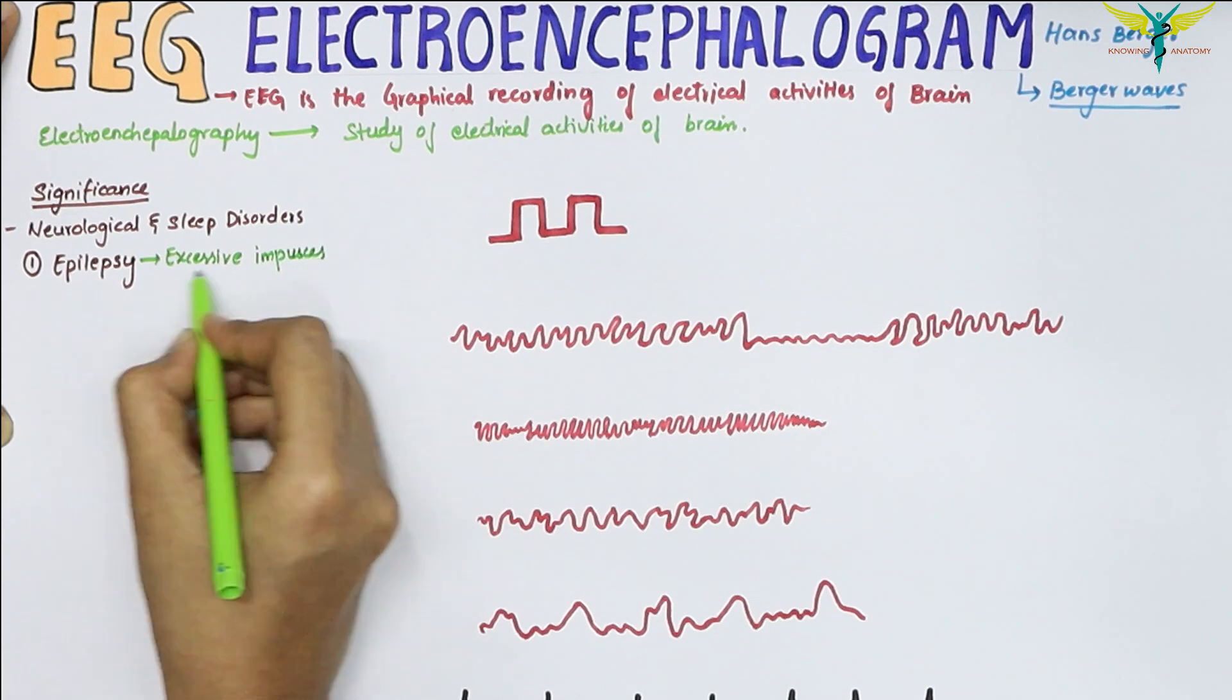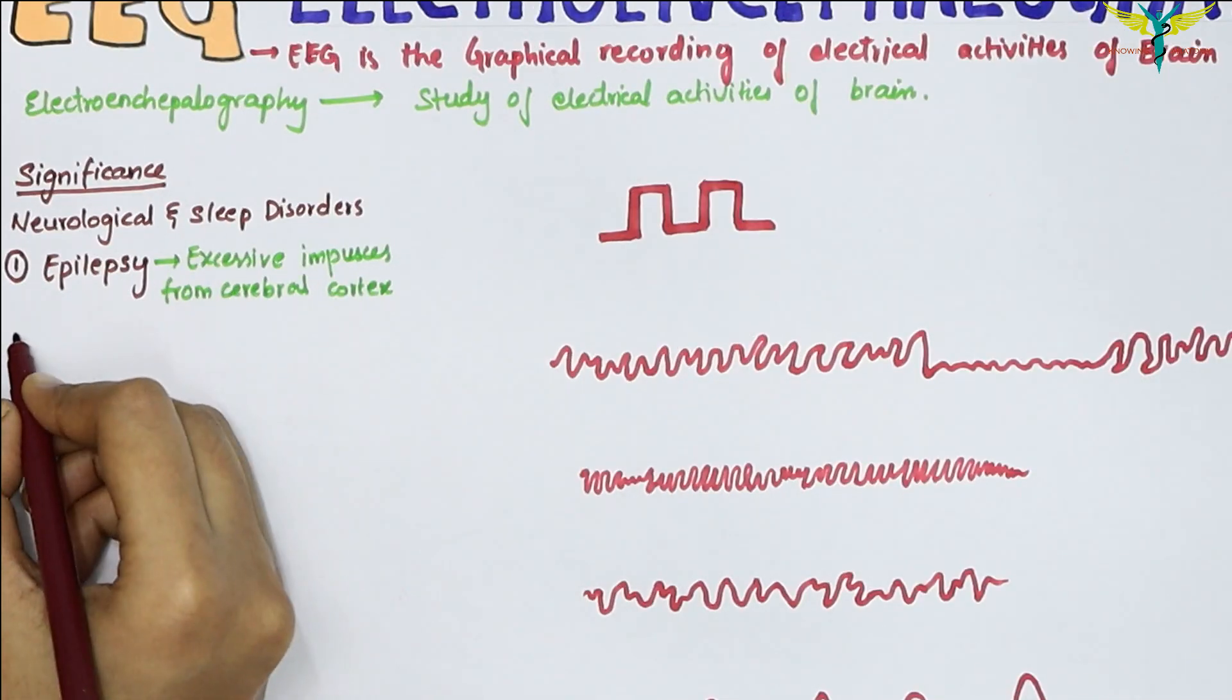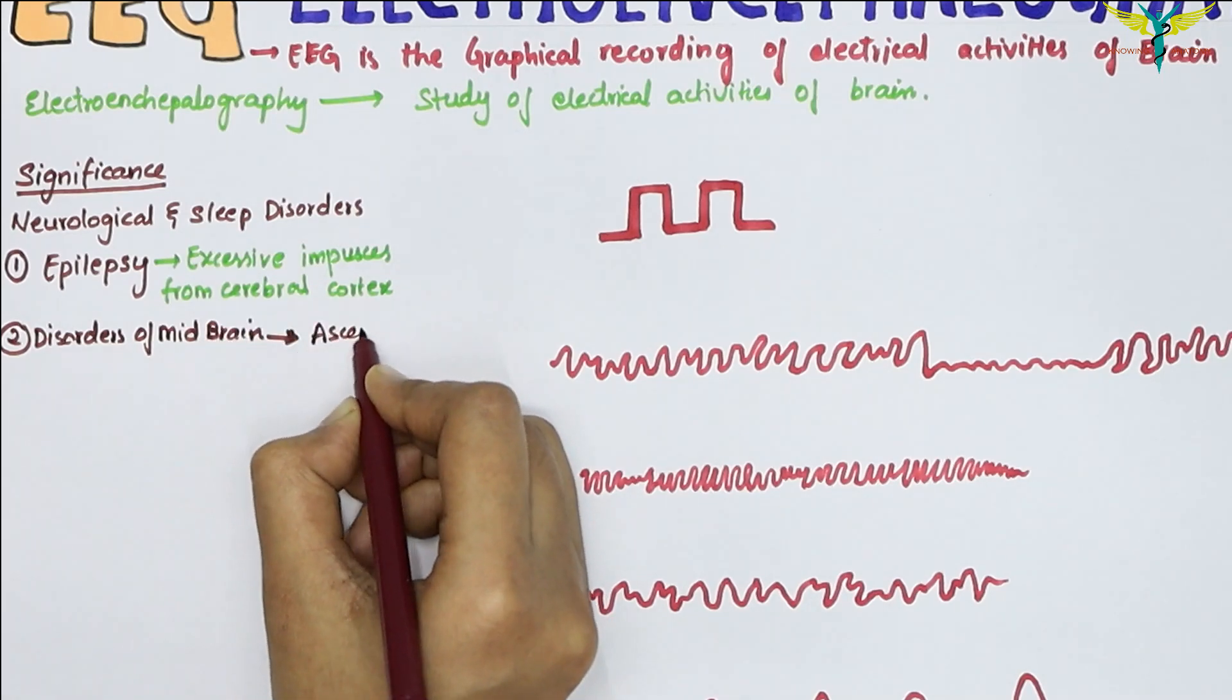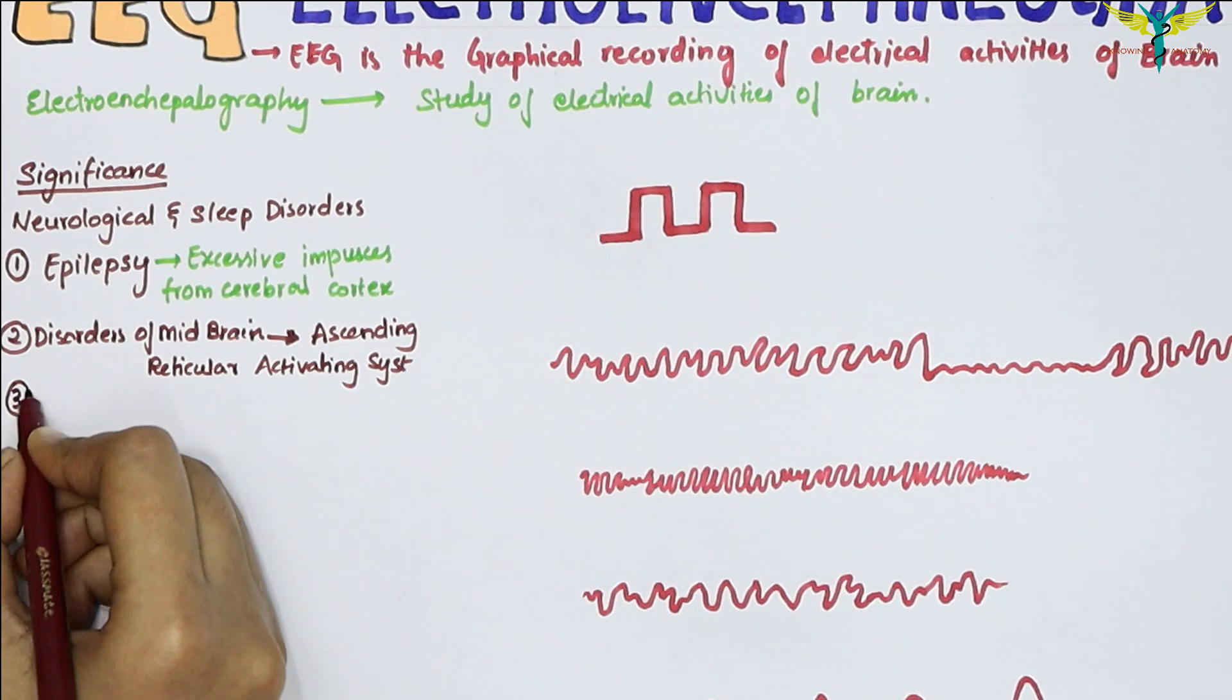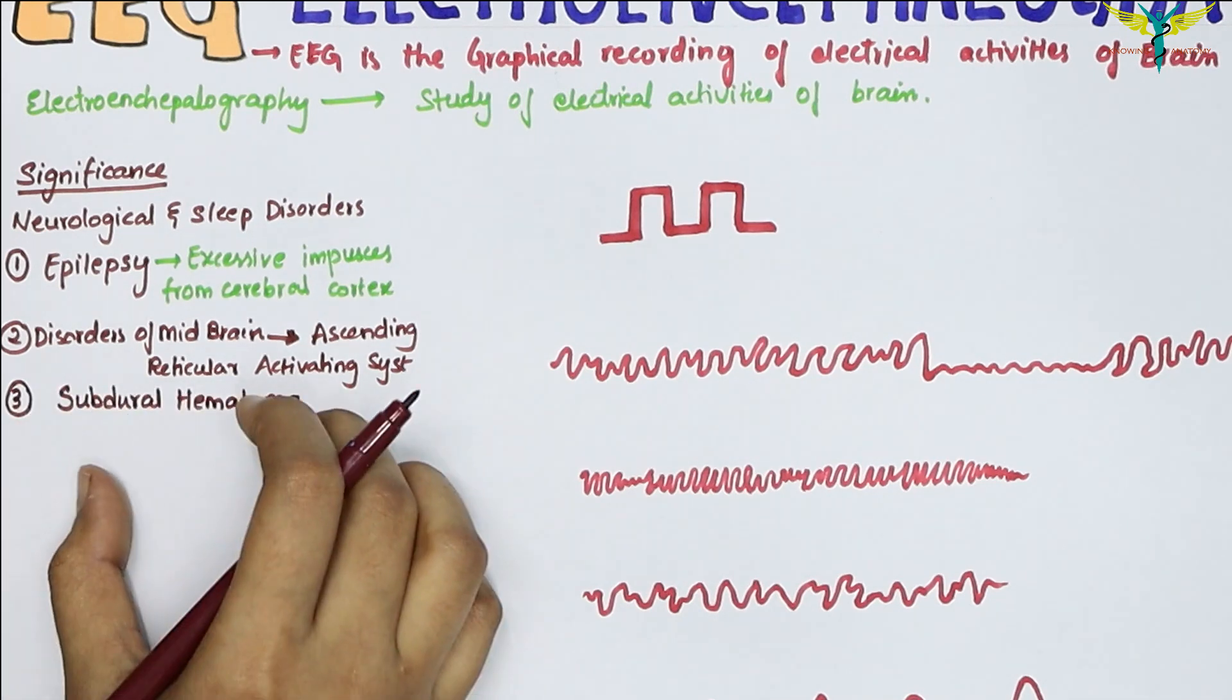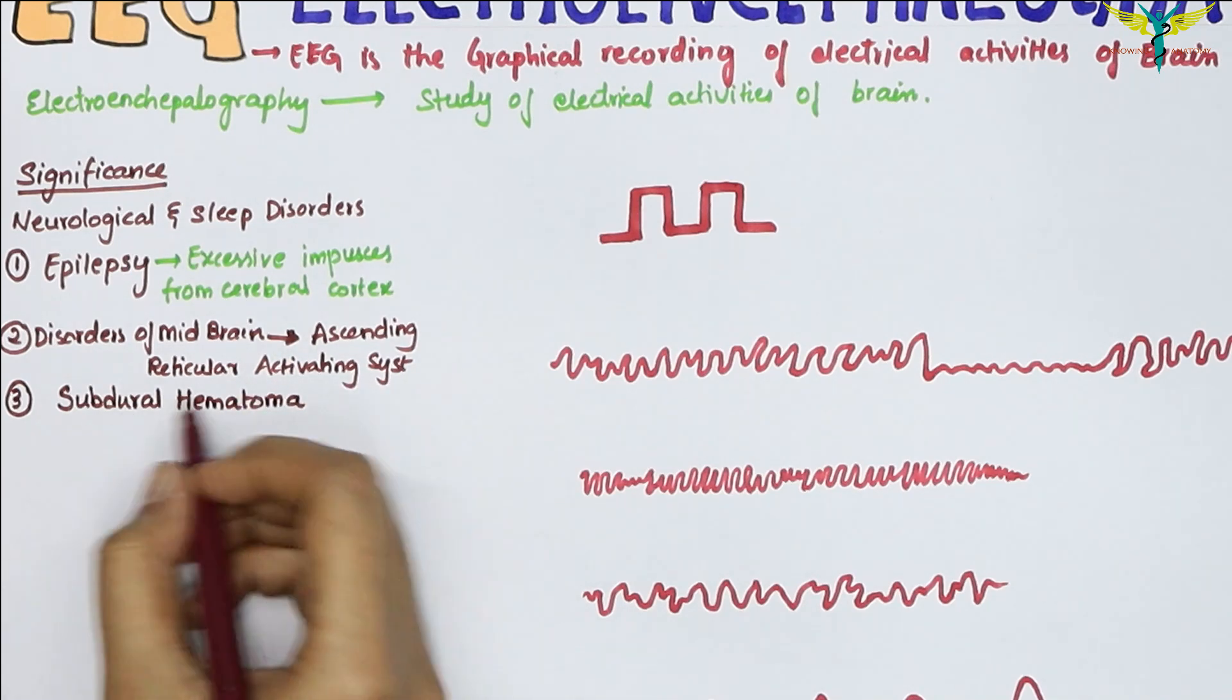The second one is disorders of the midbrain affecting the ascending reticular activating system. The third one is subdural hematoma, during which there is a collection of blood in the subdural space over the cerebral cortex.